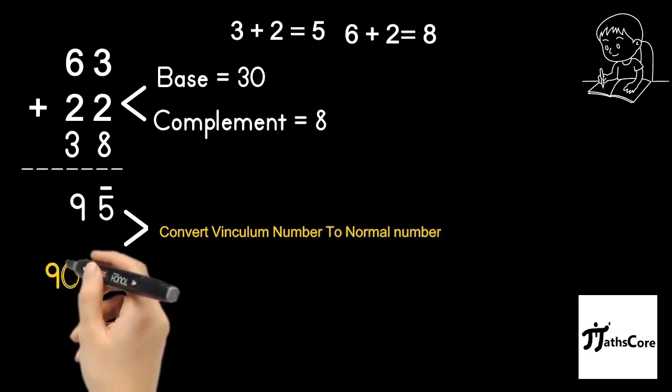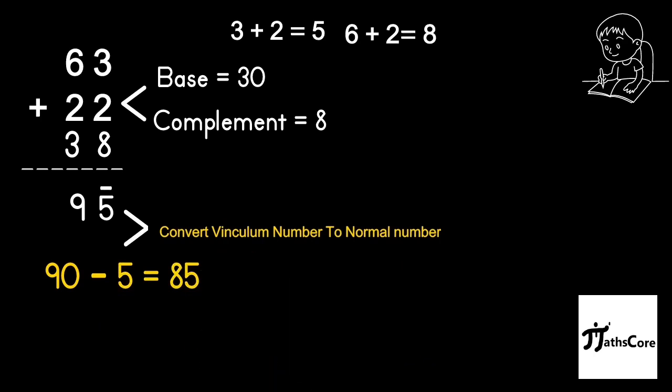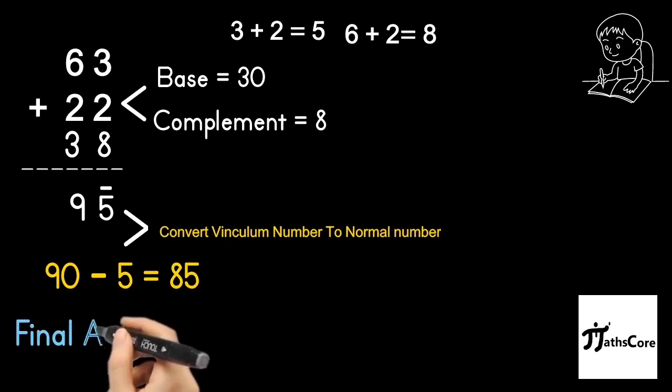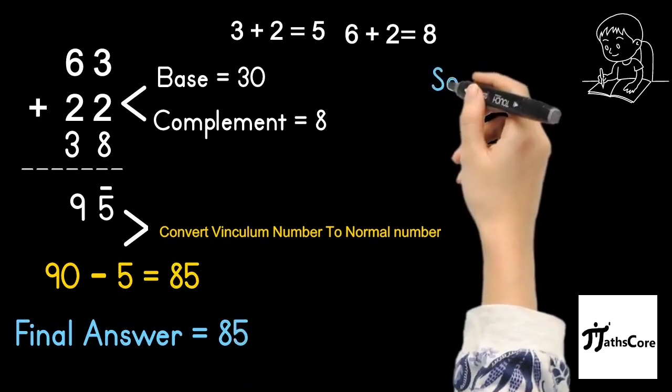Convert this vinculum number into the form of normal number. Take the place value of 9, that is 90, and the place value of 5 is 5. 90 minus 5 is equal to 85. So the final answer is 85.